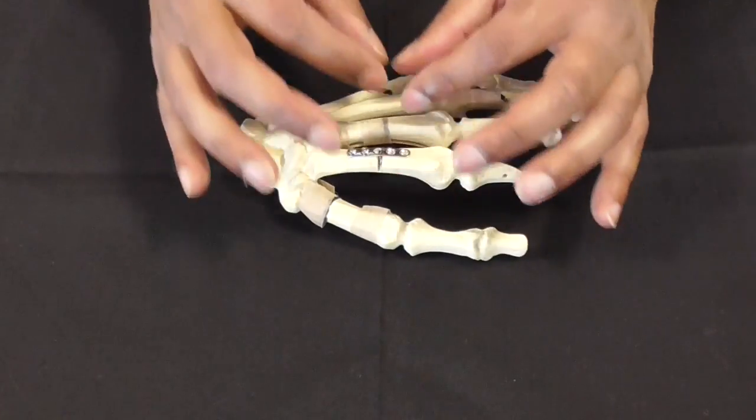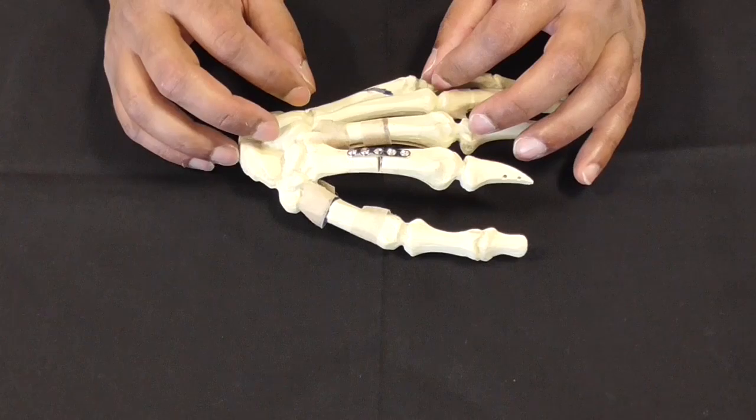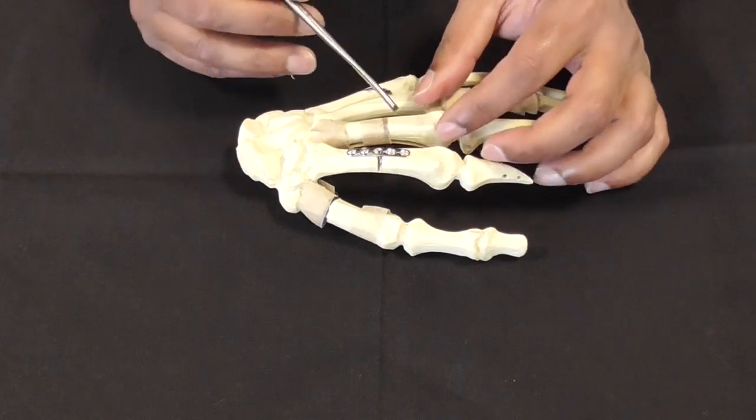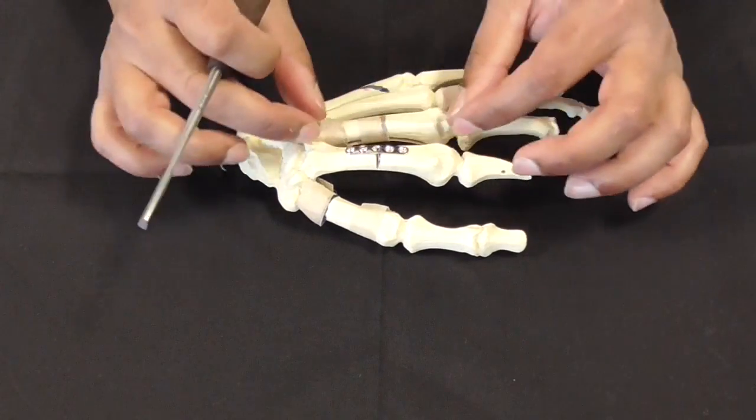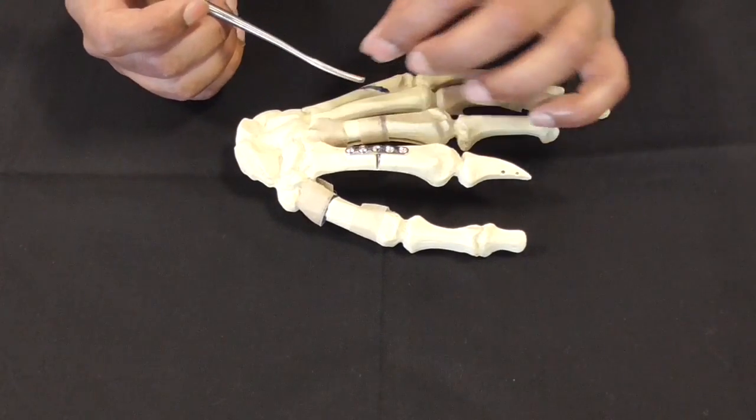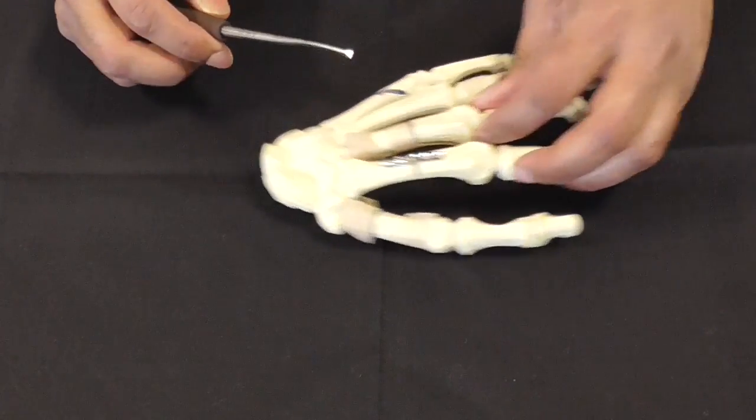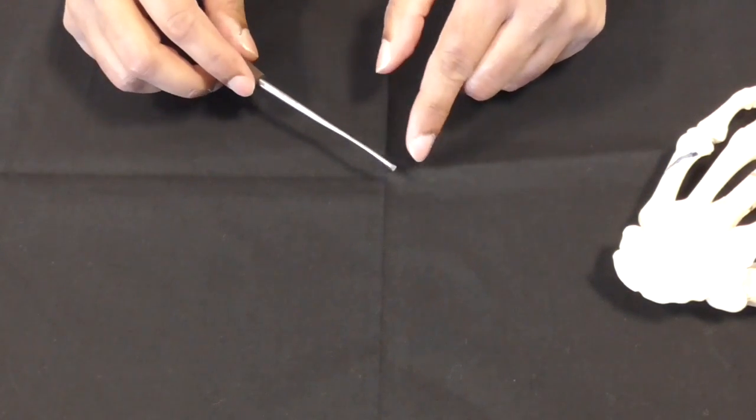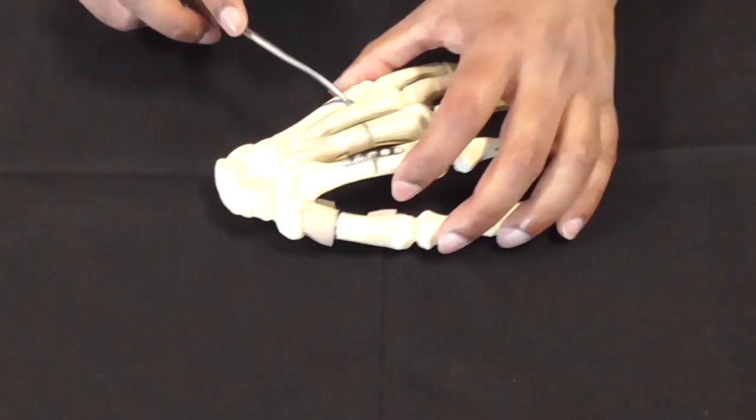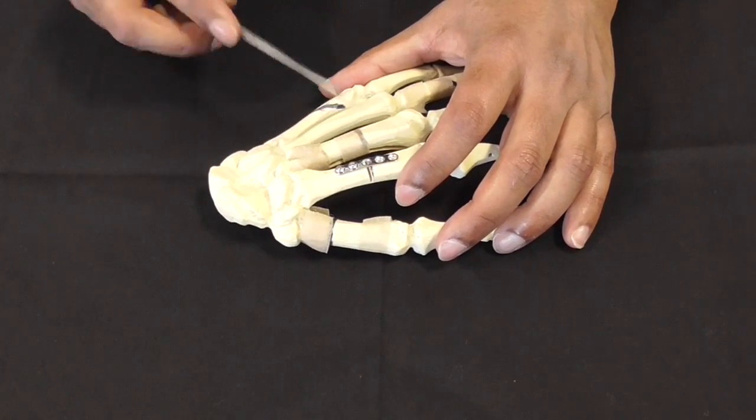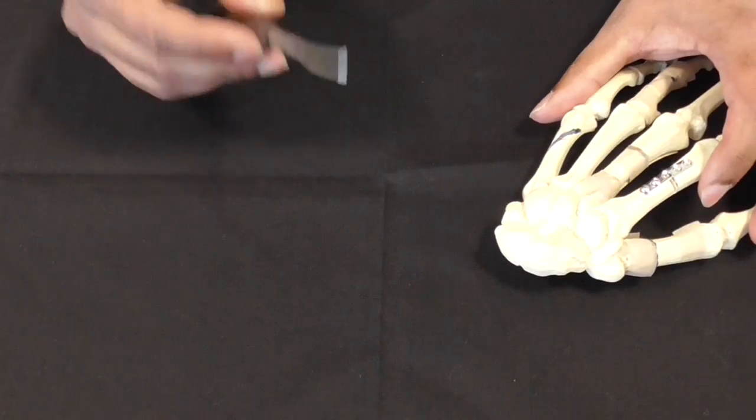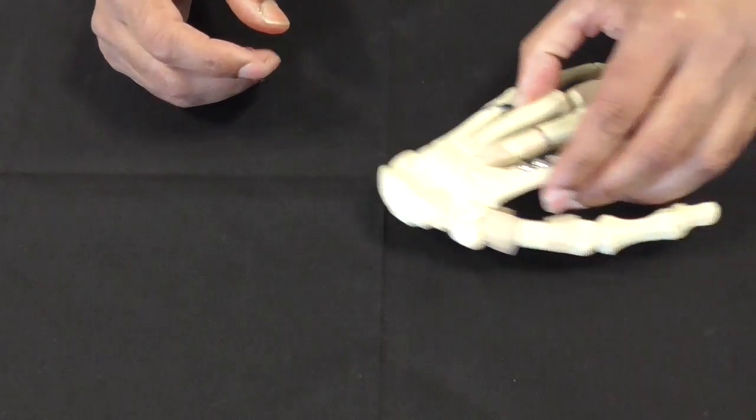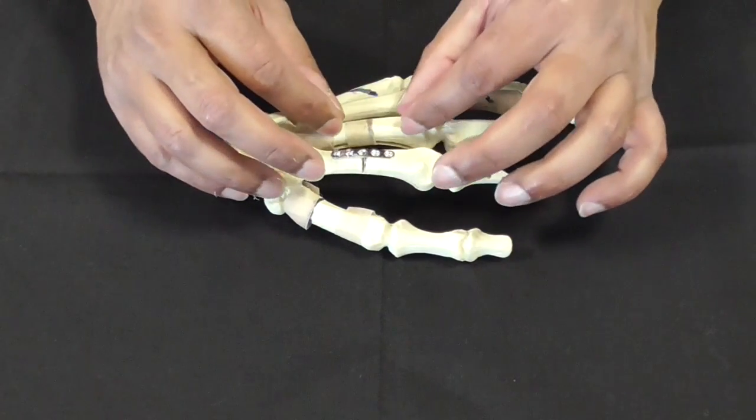Once you've got your fracture where you want it, before you put the plate on you want to take the periosteum off because you want to usually put the plate onto the bare bone. This is a periosteal elevator. It's got a sharp bit here and you raise the periosteum like that. So that's a periosteal elevator, lovely one with the wooden handle.